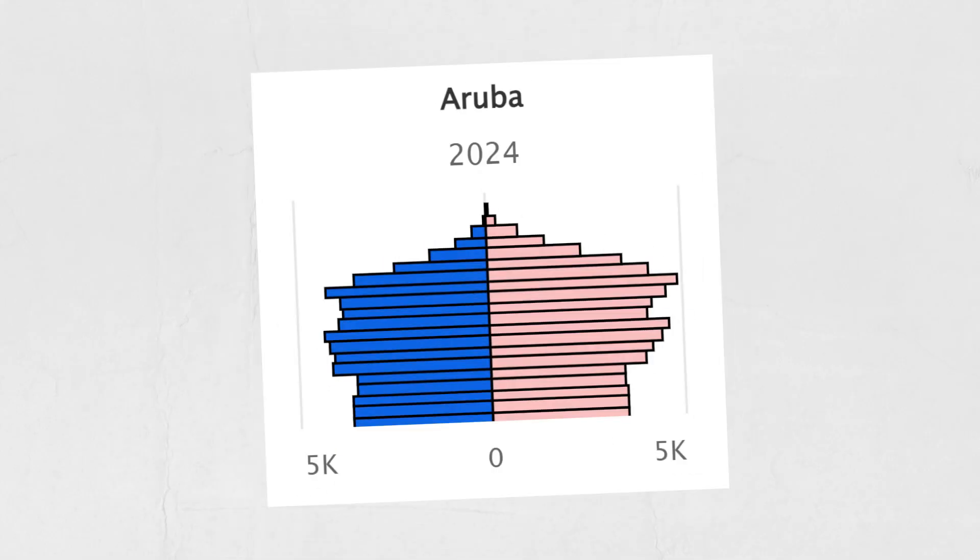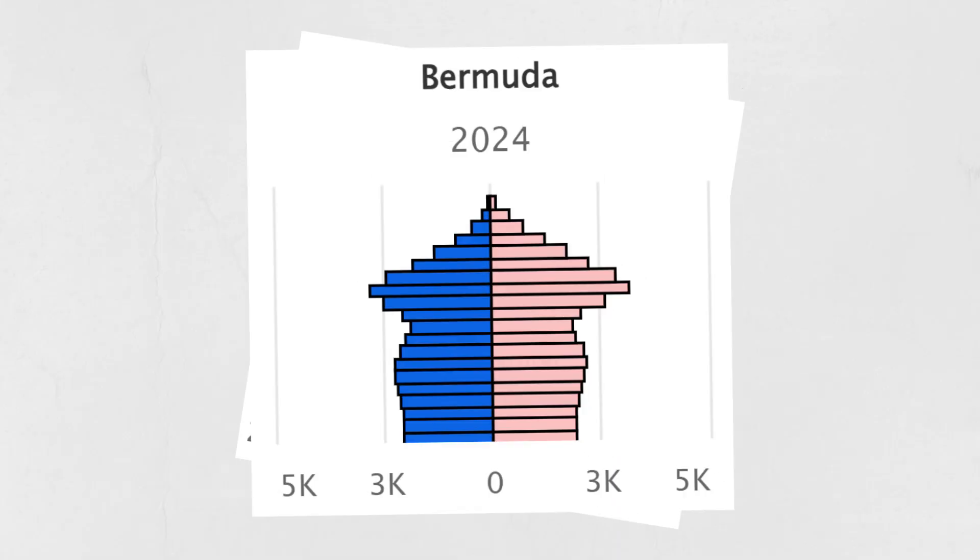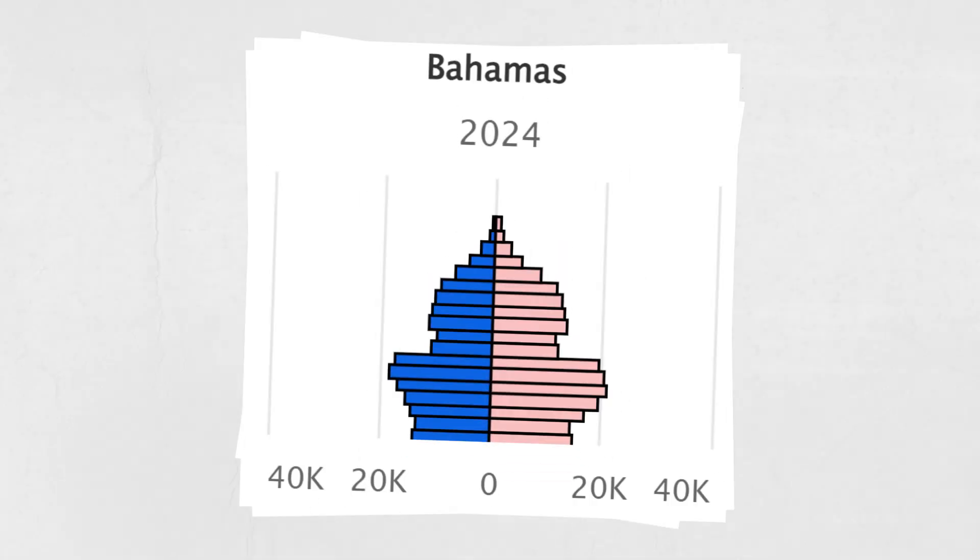For instance, here's the population pyramid for Aruba. So for a reduction in global population to be beneficial, it has to happen at a rate that doesn't skew the pyramid too much.